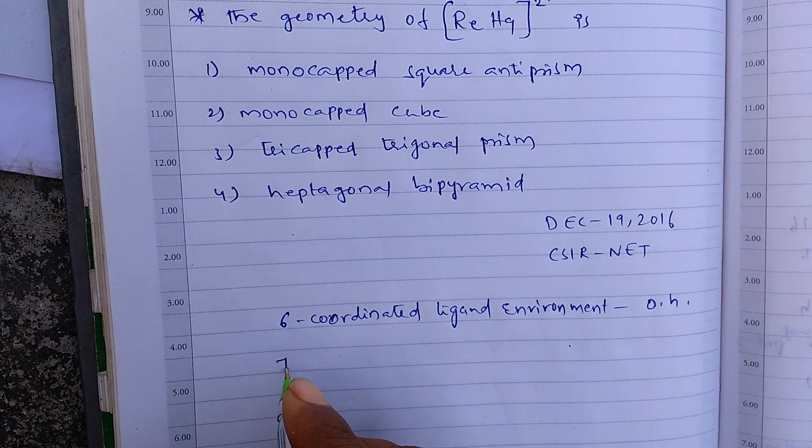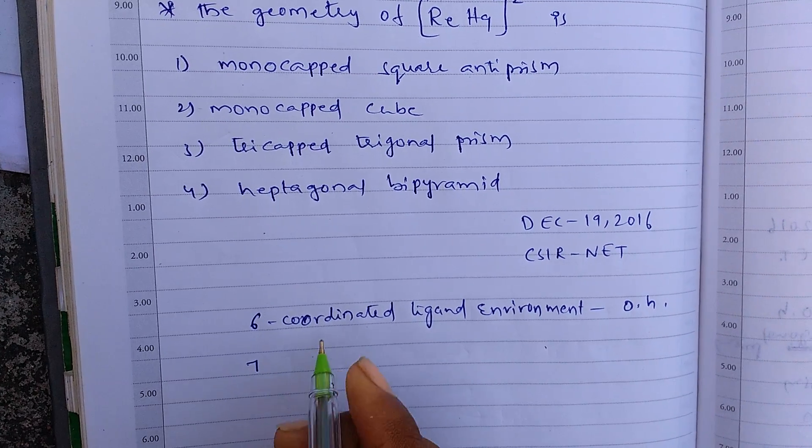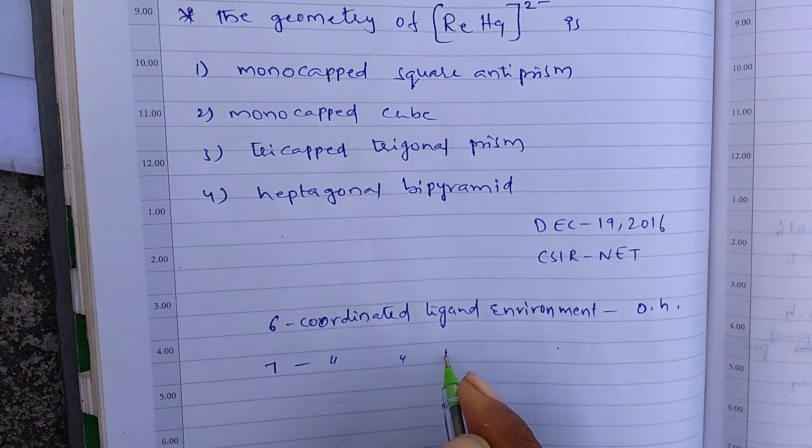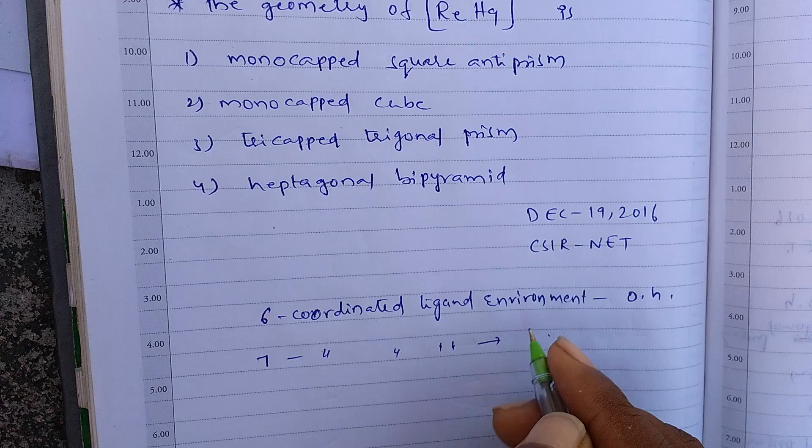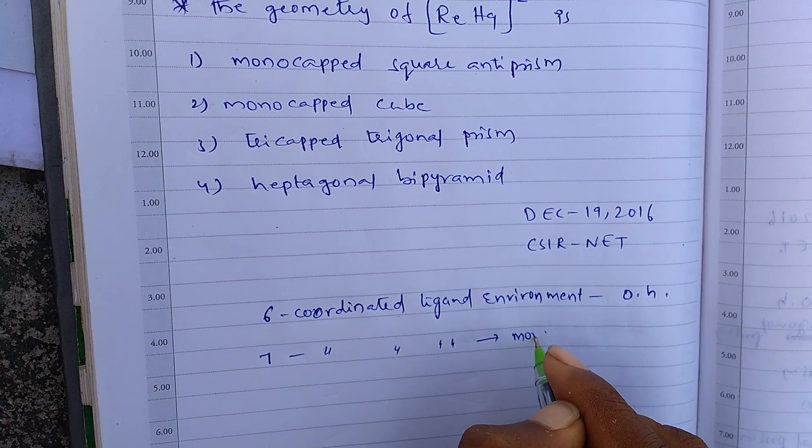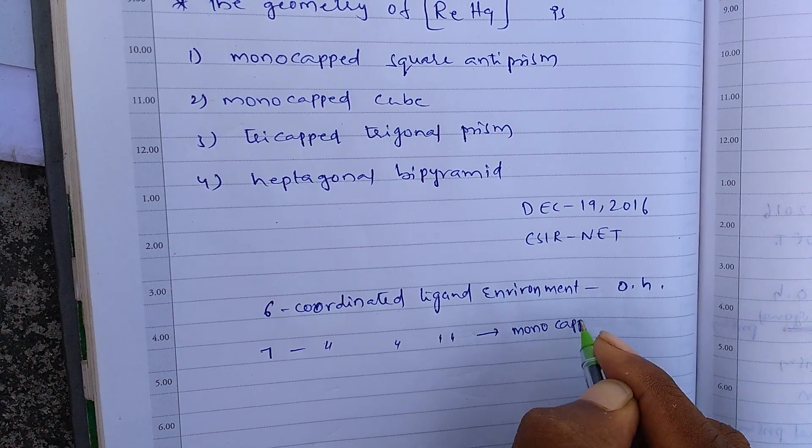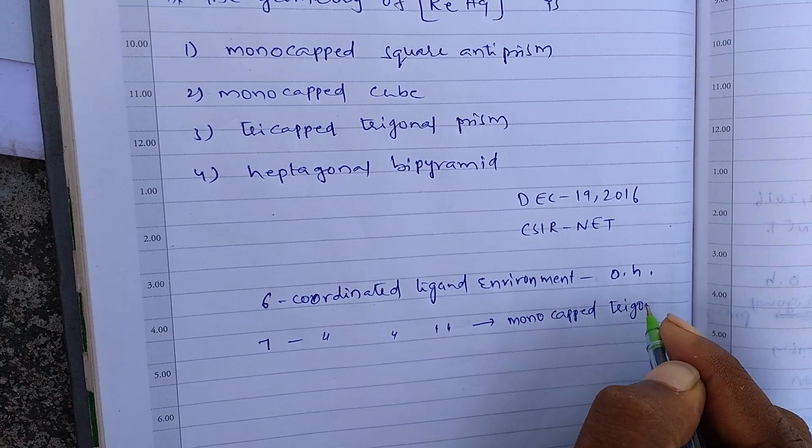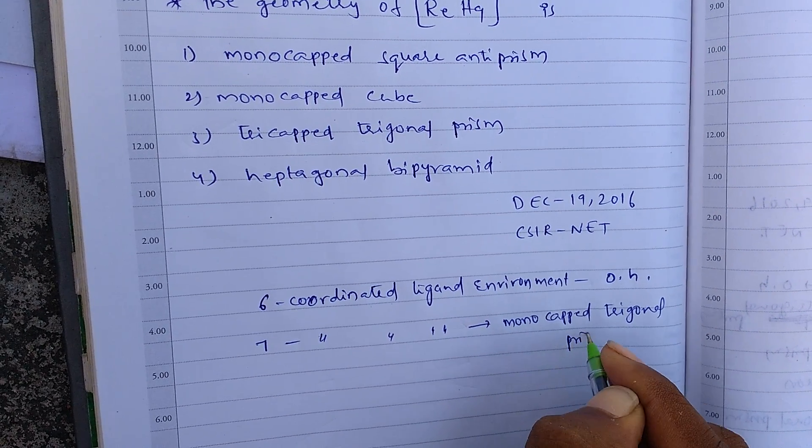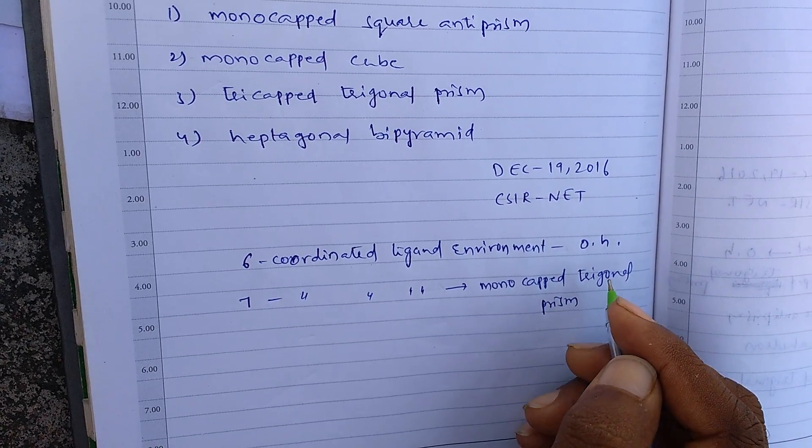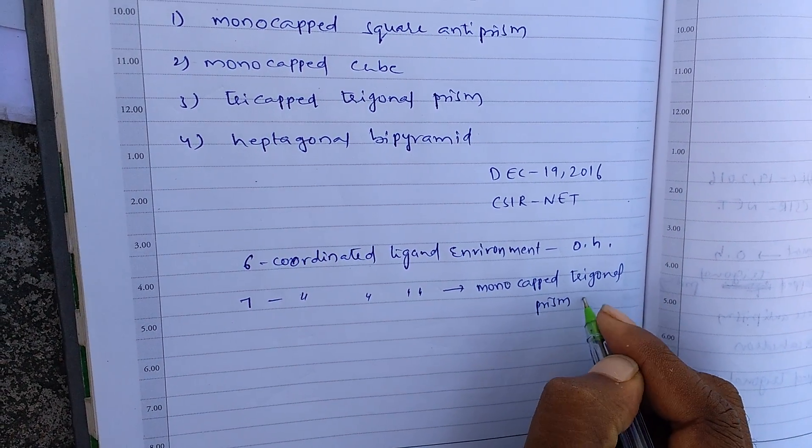If the metal is in 7 coordinated ligand environment, it has monocapped trigonal prism geometry.